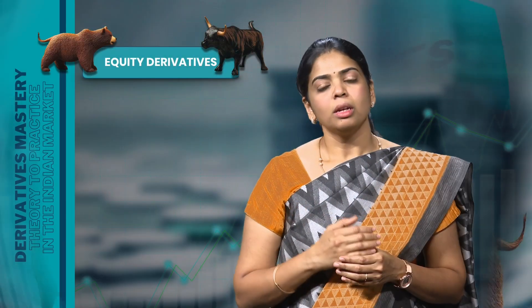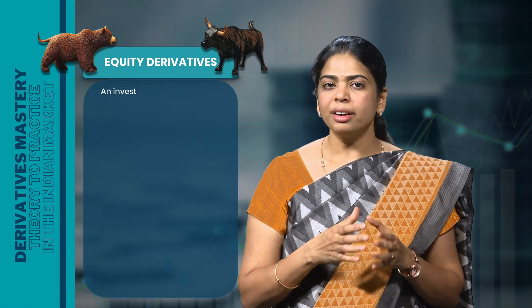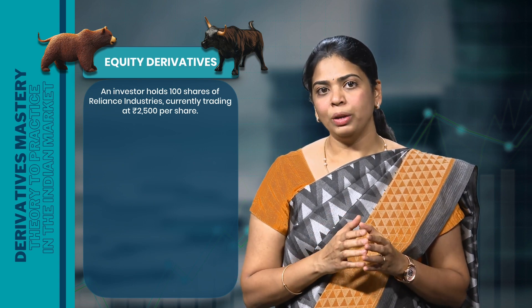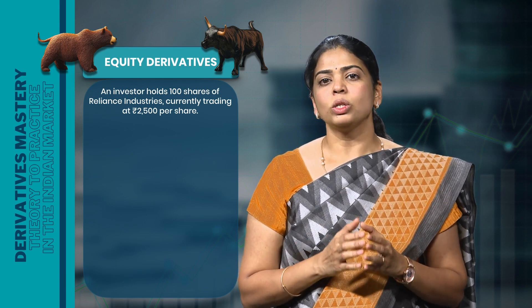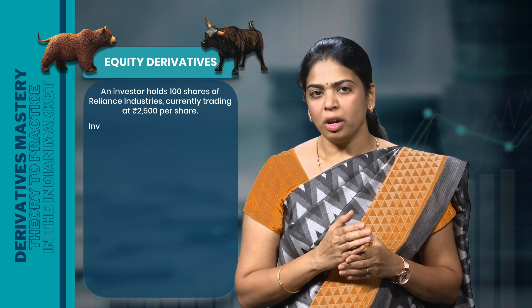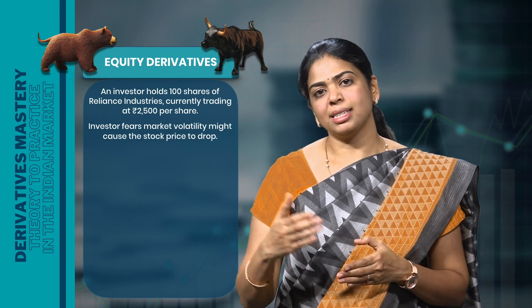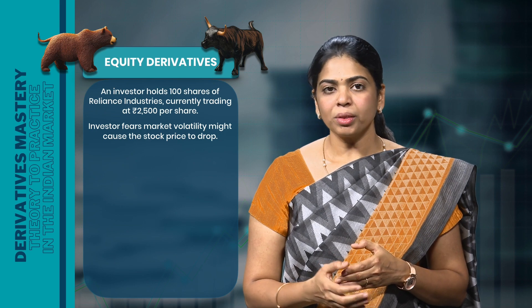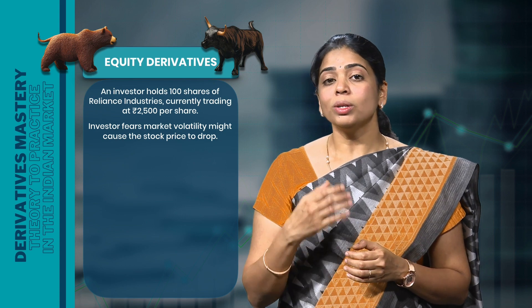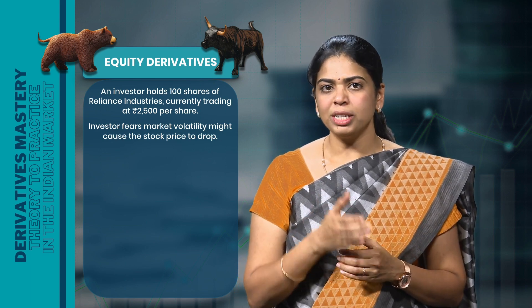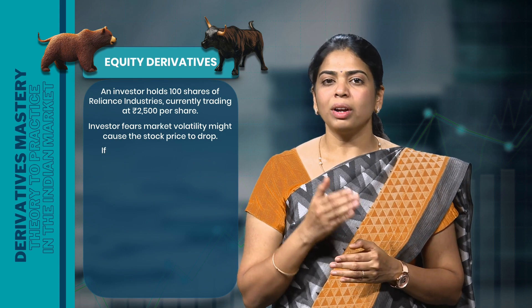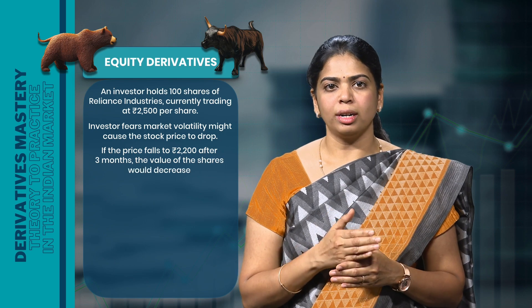Now let's move on to equity derivatives. Suppose an investor owns 100 shares of Reliance Industries, which is currently trading at Rs.2500 per share, making the total value of their shares Rs.2,50,000. The investor is worried that the price of Reliance might drop over the next 3 months due to market volatility. To protect himself from this risk, he can enter into a futures contract with another trader to sell the shares after 3 months at Rs.2550 per share, irrespective of the share price 3 months later.